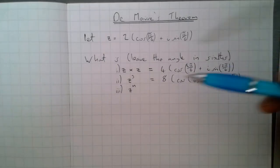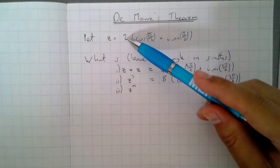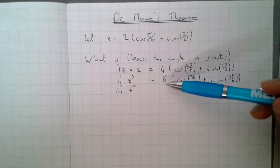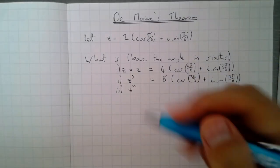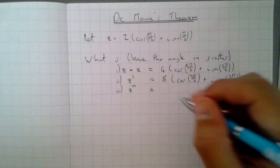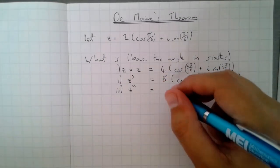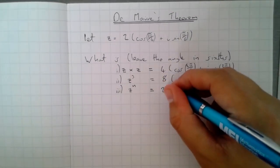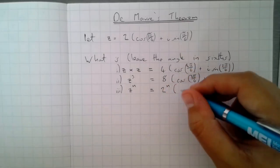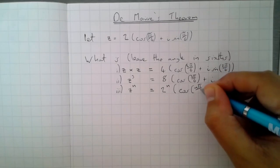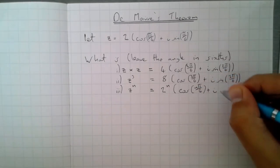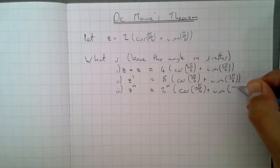z cubed, so I've just ended up timesing 2 by itself 3 times, because I'm timesing z by itself 3 times to get 8. I've added the arguments together 3 times to get 3π over 6. And hopefully for this one you've got 2 to the power of n cos nπ over 6 plus i sine nπ over 6.